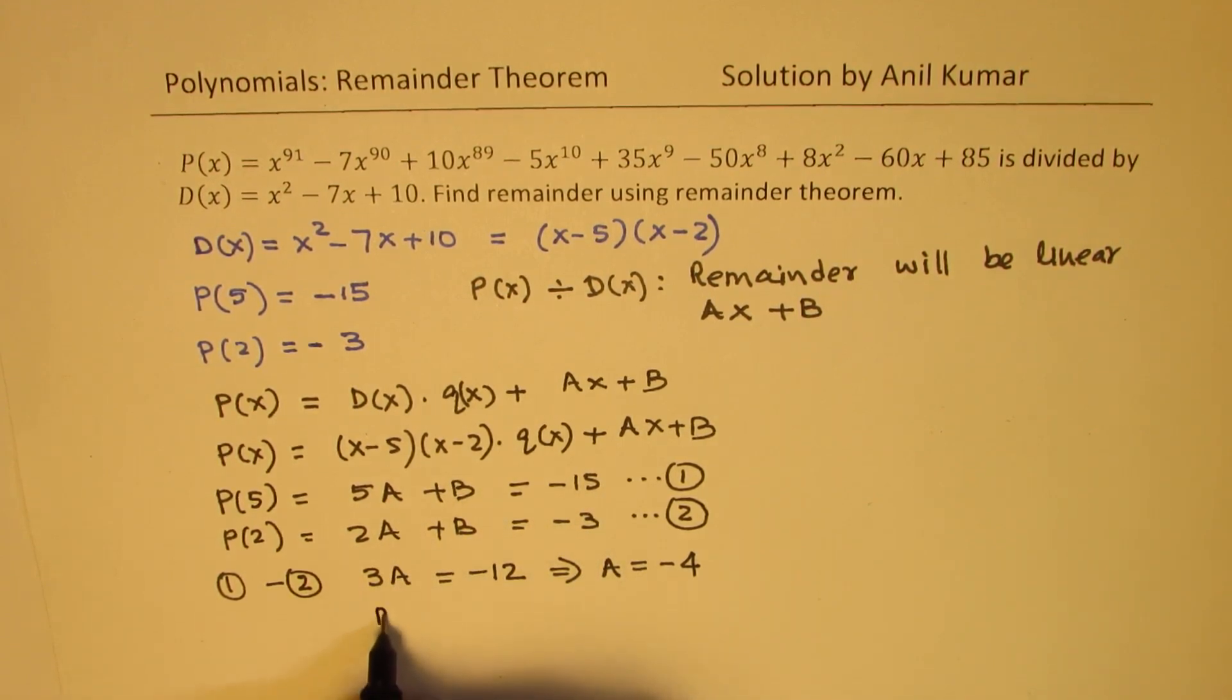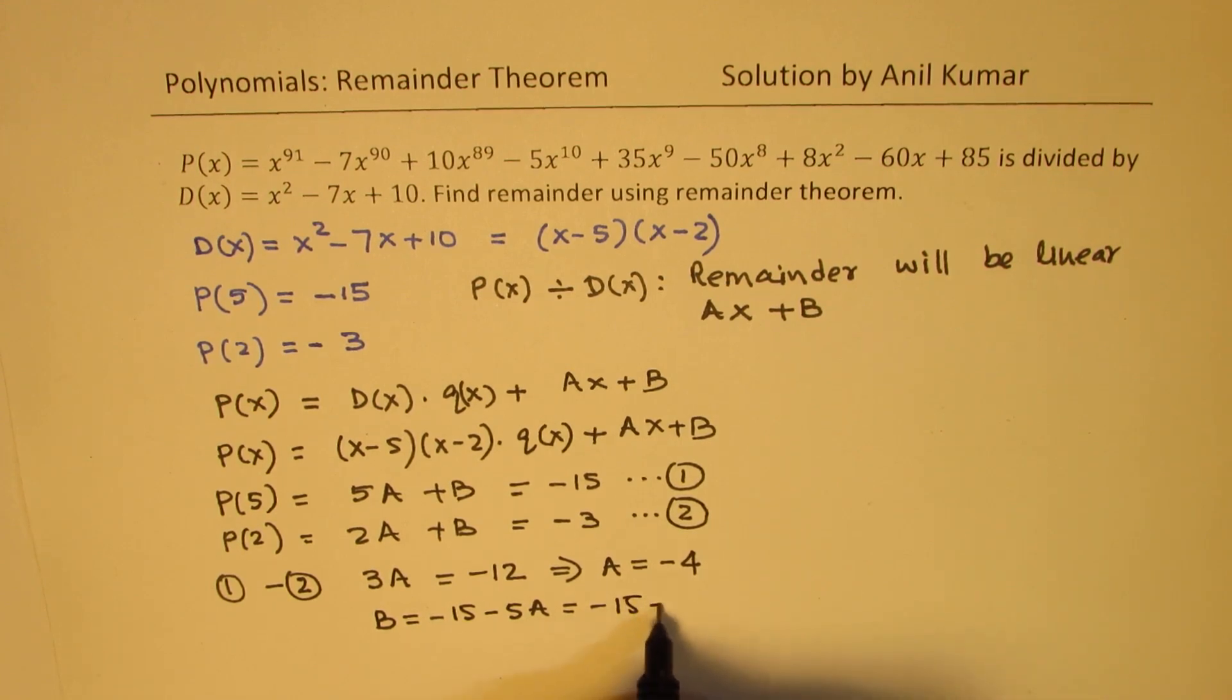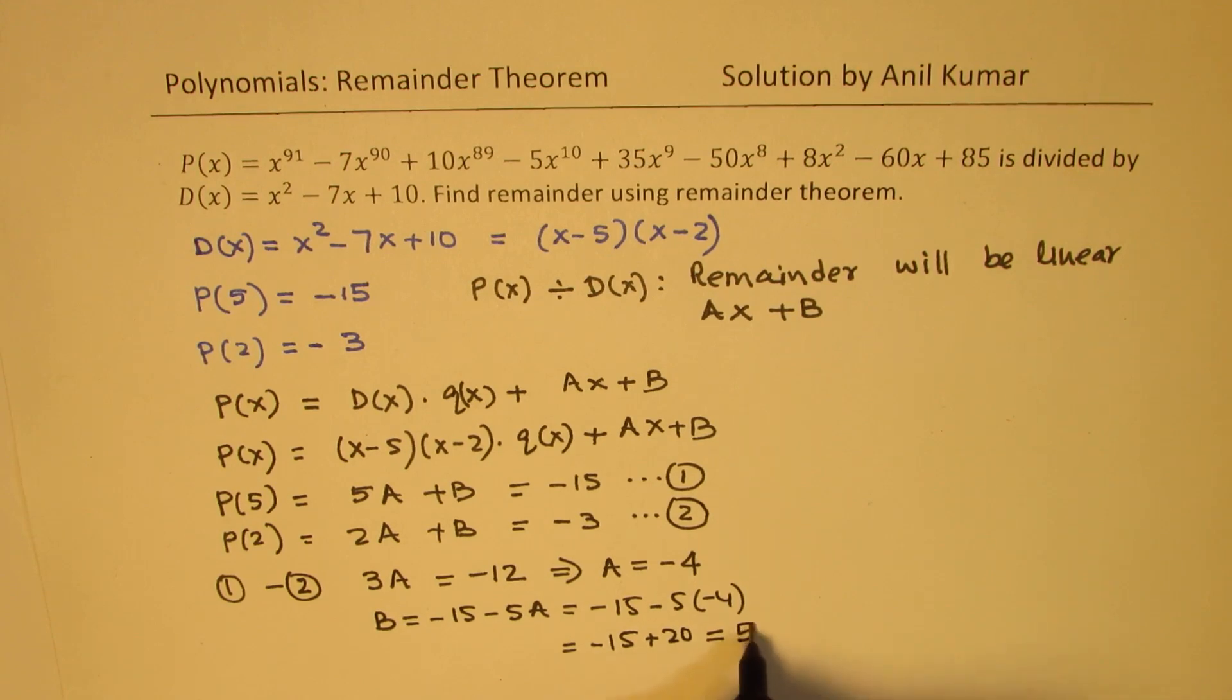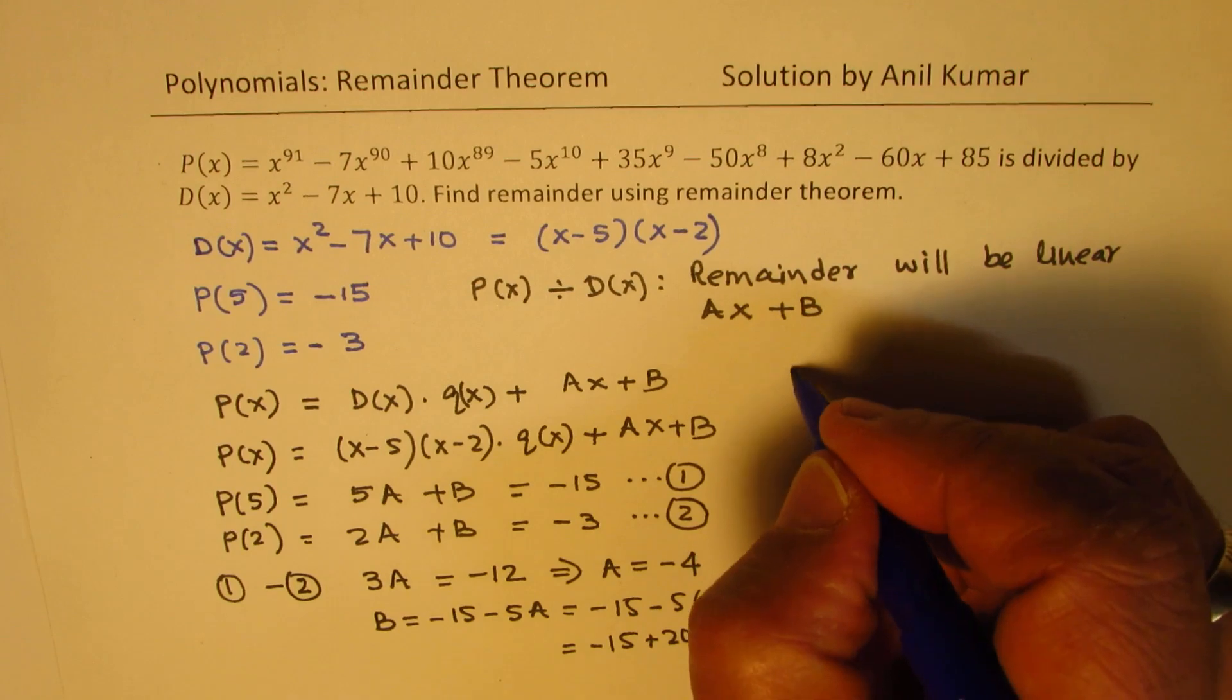So we can get the value of B by using one of these equations. So we know that B is equal to minus 15 minus 5A. Now substituting minus 4 here, we get minus 15 minus 5 times minus 4, which is plus 20. And when you take away, so 20, that gives you plus 5. So clearly, we get the value of A and B, and that is the remainder.